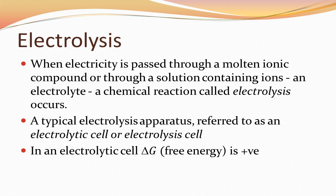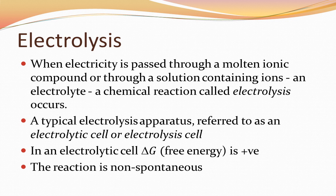Since this reaction does not take place by itself — we have to force it using electrical energy — this is not a spontaneous reaction. Therefore, delta G will be positive, and we can say it is a non-spontaneous reaction. You can also calculate the standard cell potential E0 cell, and you'll find it has a positive value, confirming the reaction is non-spontaneous. We bring about this chemical change by forcing it using electrical energy.